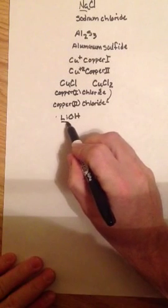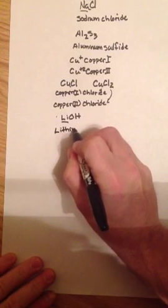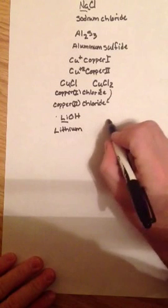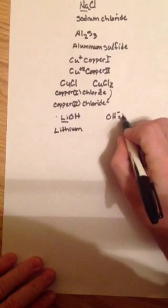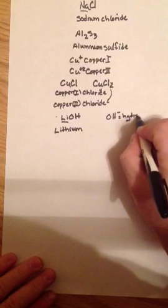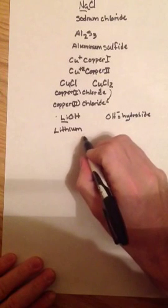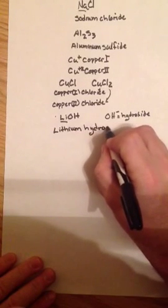Well I know that Li is the lithium ion, and OH is what we call the hydroxide ion. So the name of this compound would be lithium hydroxide.